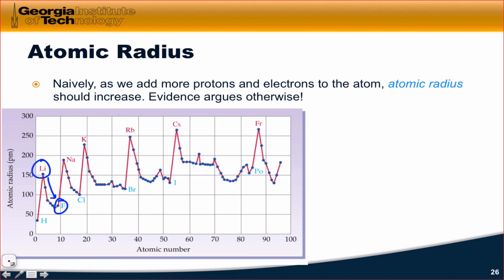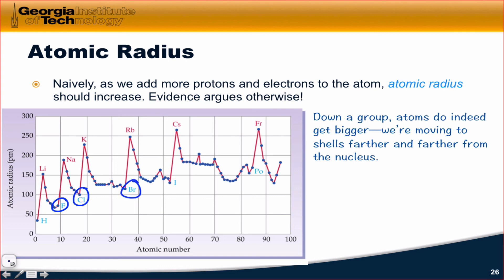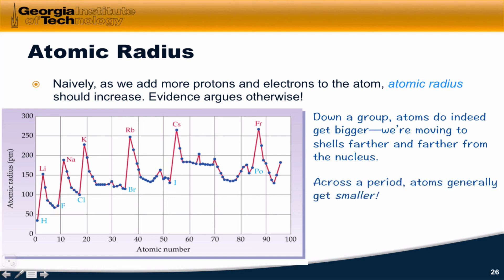When we go from fluorine to sodium, we see a large jump up in atomic radius. Same idea for chlorine to potassium and bromine to rubidium — we get these large jumps. Down a group, atoms do indeed get bigger. We can also notice that fluorine, chlorine, bromine, and iodine — within the halogens — increase in size as we move down a group. But across a period, atoms actually get smaller.